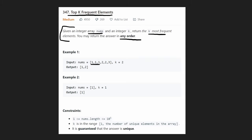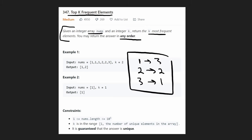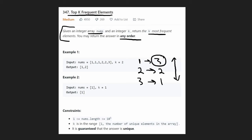For each value, we count how many occurrences it has. One occurs three times, two occurs twice, and three occurs once. We can take this list of pairs and sort it in descending order so the most frequent is first, the second most frequent is second, and so on. In the worst case, if every value is distinct, sorting gives us a time complexity of O(n log n).